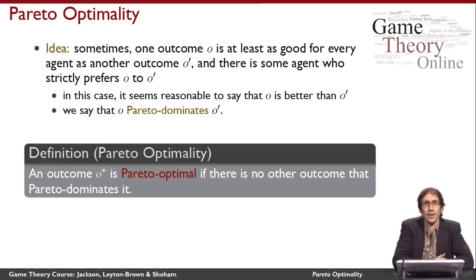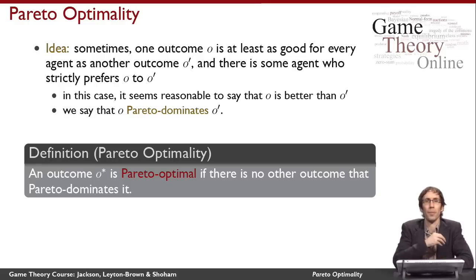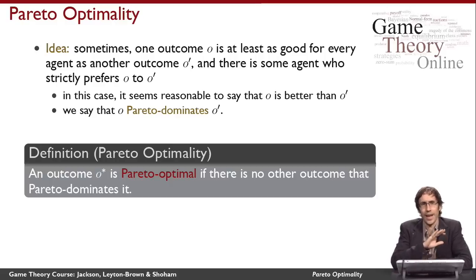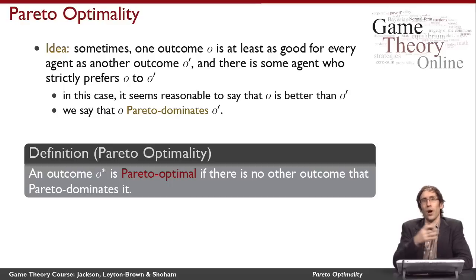Now I can define Pareto optimality. An outcome O* is Pareto optimal if it isn't Pareto dominated by anything else — there's nothing else that I can prefer to it. That's defined in negative terms: O* is Pareto optimal if nothing Pareto dominates it.